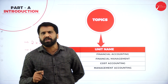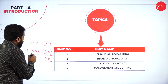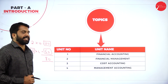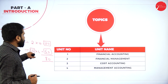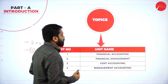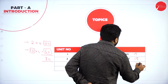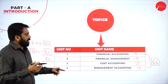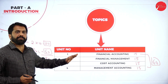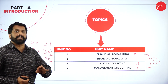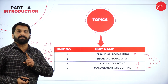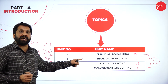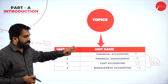For the 15-mark section, you will get 4 questions — one from each topic: financial accounting, financial management, cost accounting, and management accounting. You cannot skip even one topic. Earlier students would skip two topics if they were strong in the other two, but now every part gives one question and you are supposed to attend all 4 questions.